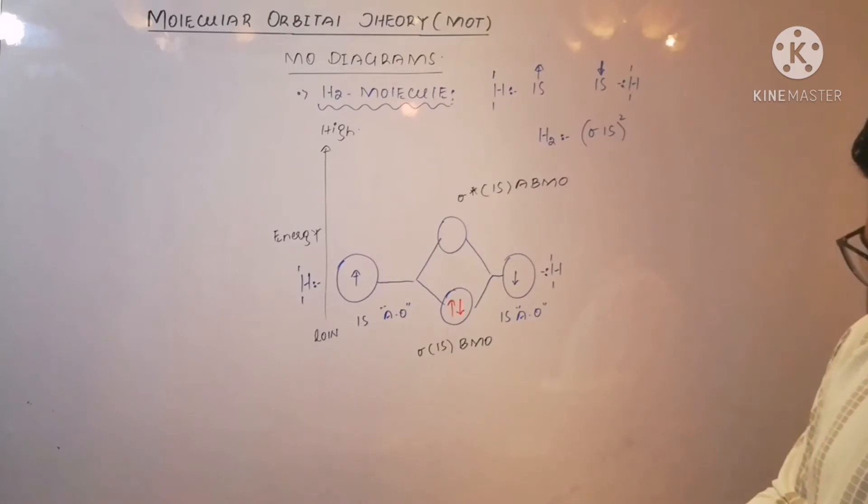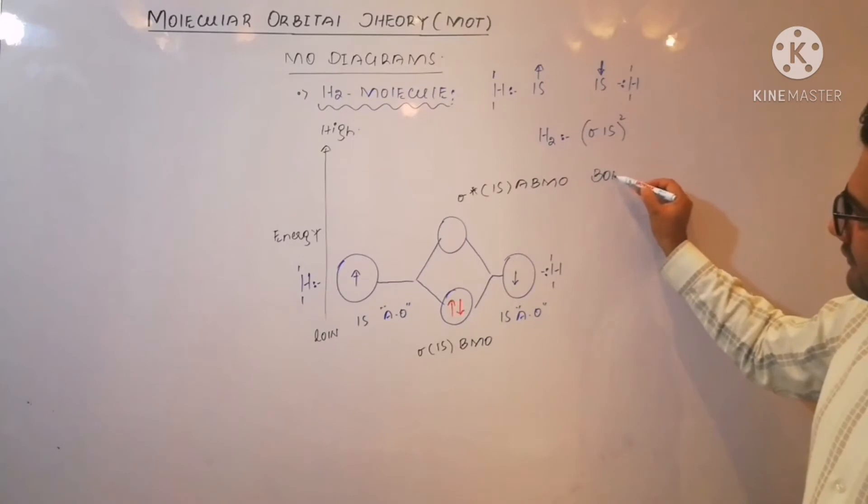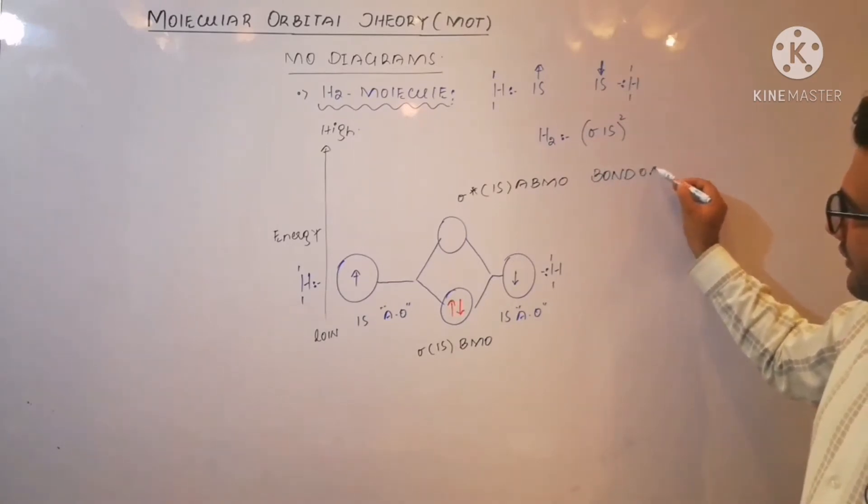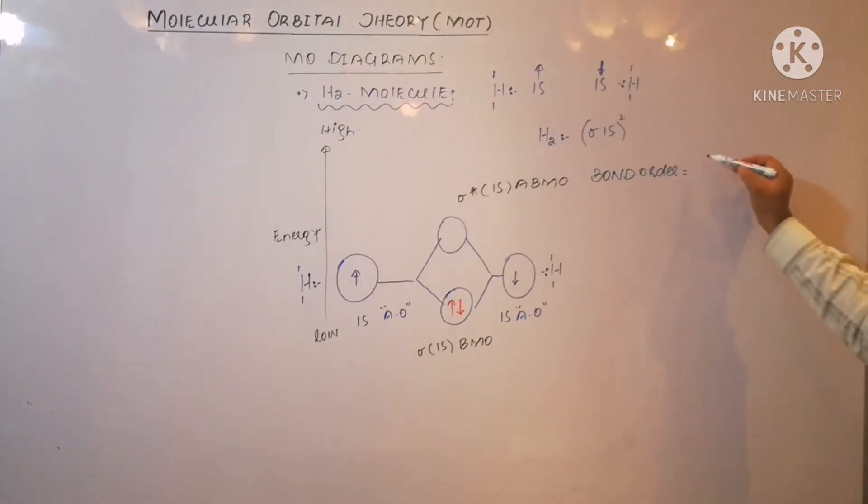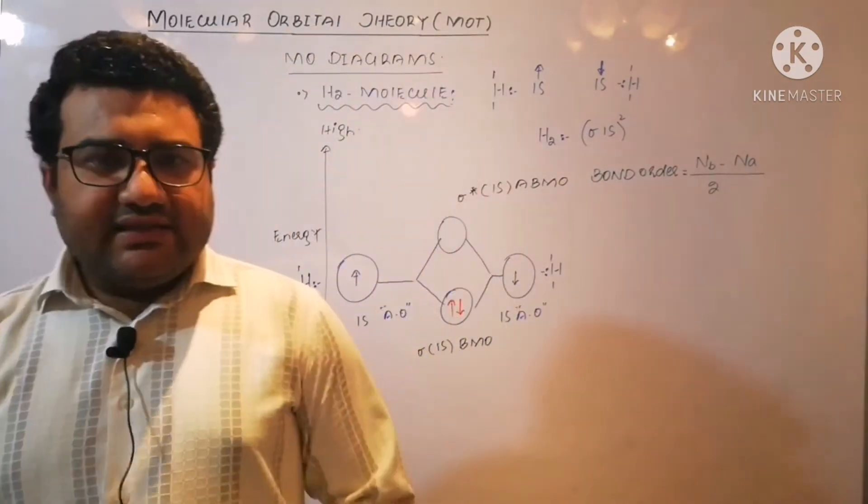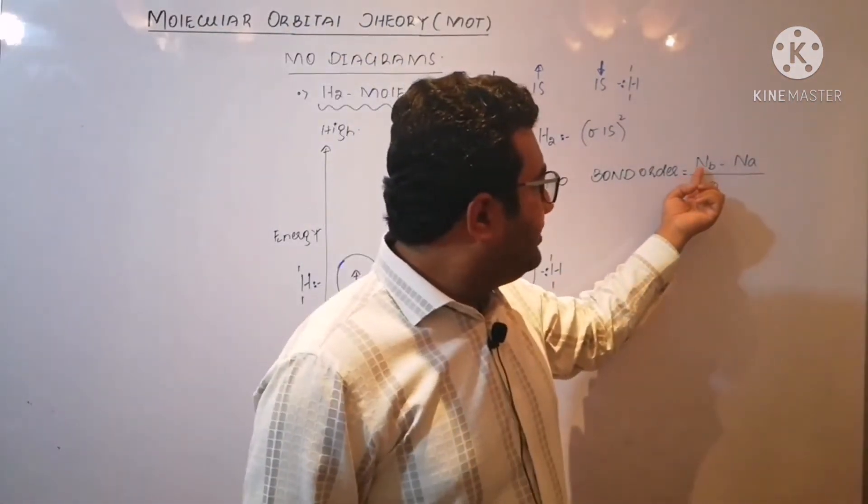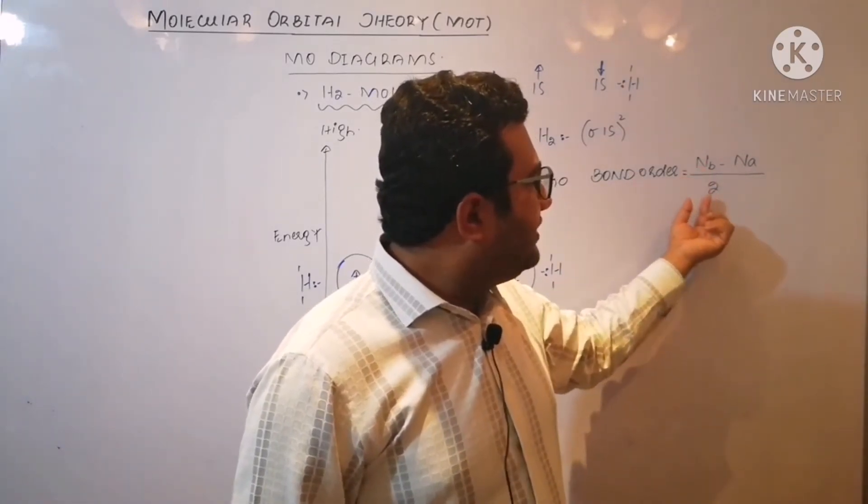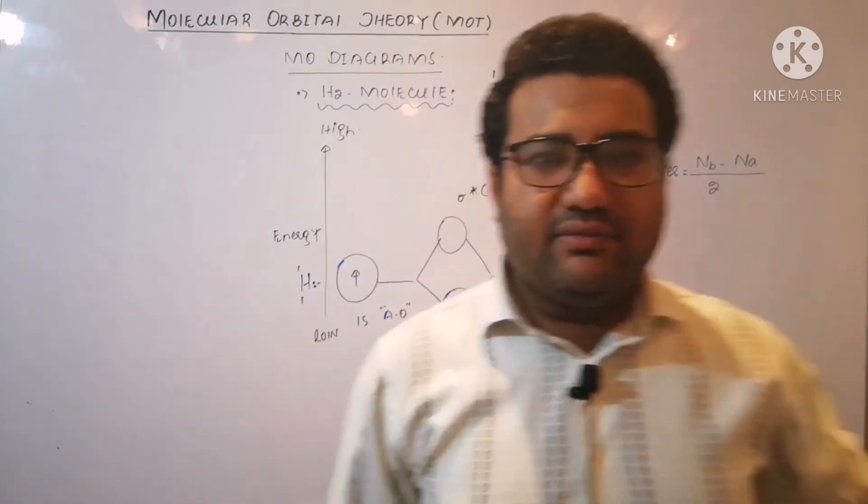We can also calculate a very important concept here, that is the bond order. Actually bond order is equal to the number of electrons in bonding molecular orbital minus number of electrons in anti-bonding molecular orbitals, divided by 2. Or you can say half of the difference of the electrons in bonding molecular orbitals and anti-bonding molecular orbitals.